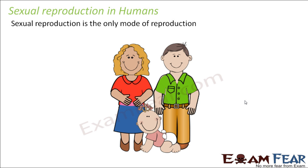In human beings also, it is not that every human being is capable of reproducing. Initially, when a baby is born, that baby is not capable of giving birth to a new human being. Only after a certain age does a man or woman become capable of reproducing, and that age is called puberty.